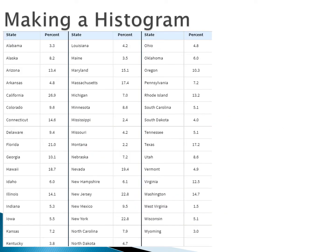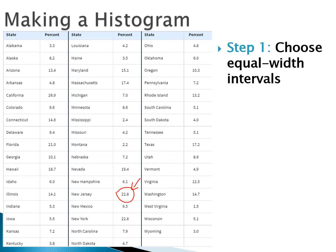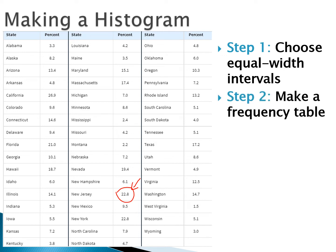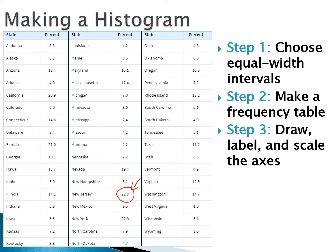Let's make a histogram using the raw data — a table showing the percent of foreign-born residents in each of the 50 states. It's fun to note New Jersey at 22.8%, one of the higher values. To make a histogram, we follow four steps: choose our intervals, make a frequency table, draw and label and scale the axes, and then draw the bars.